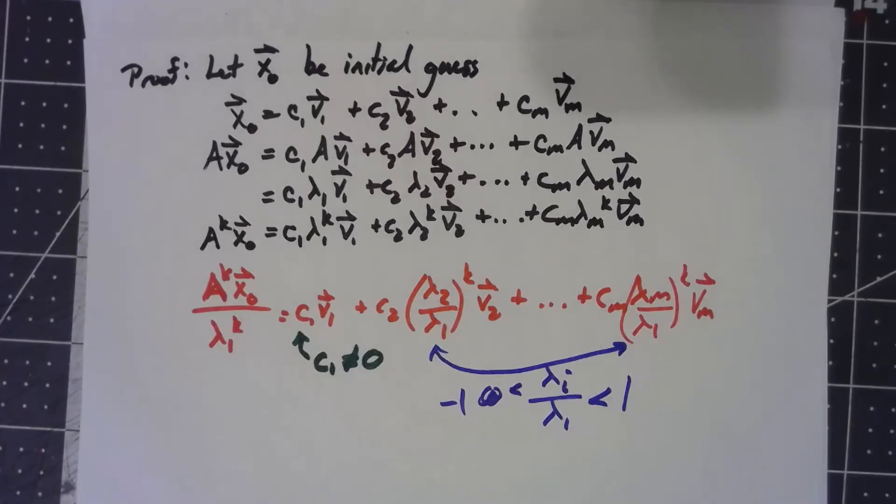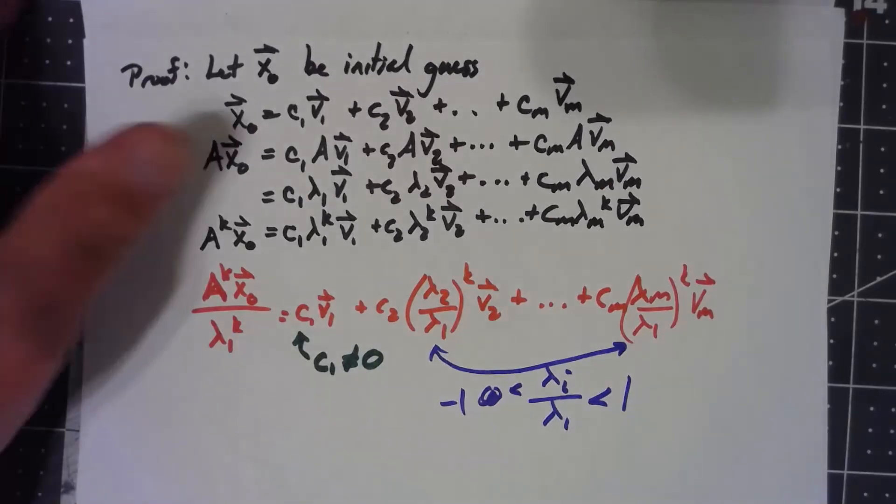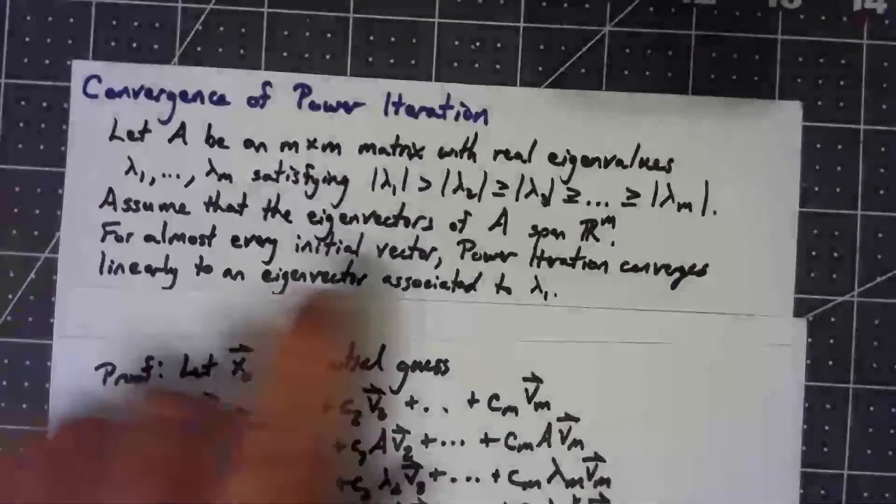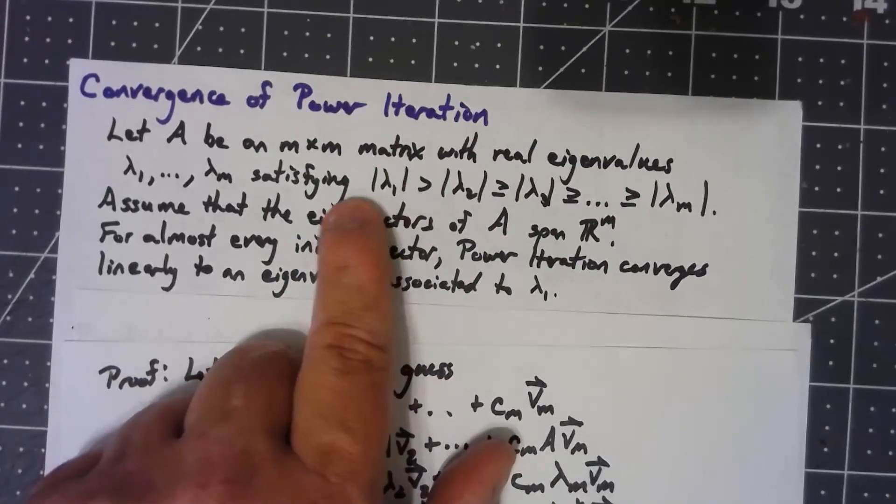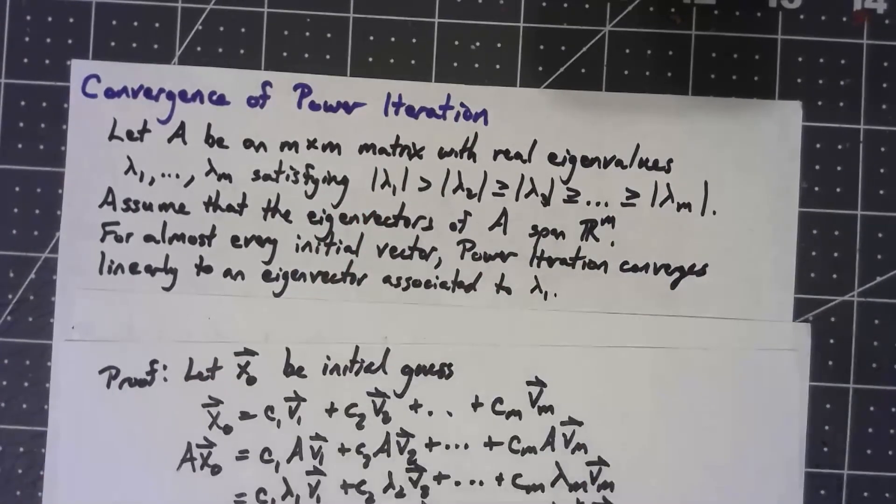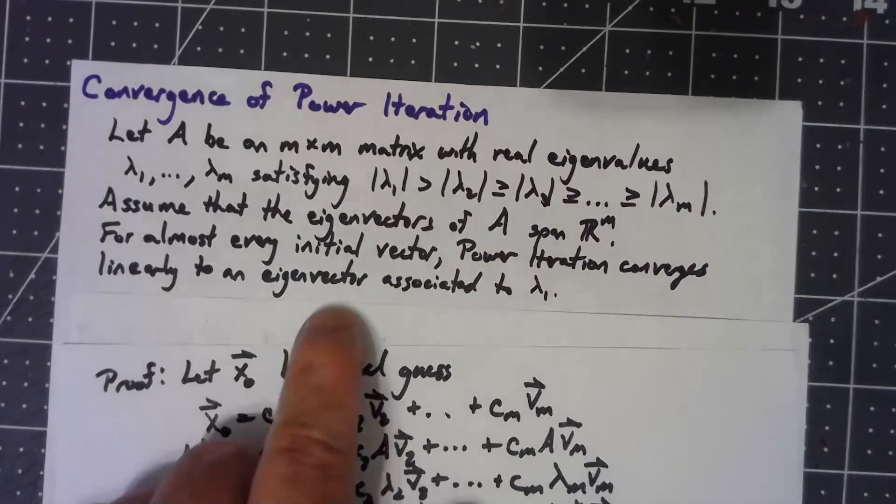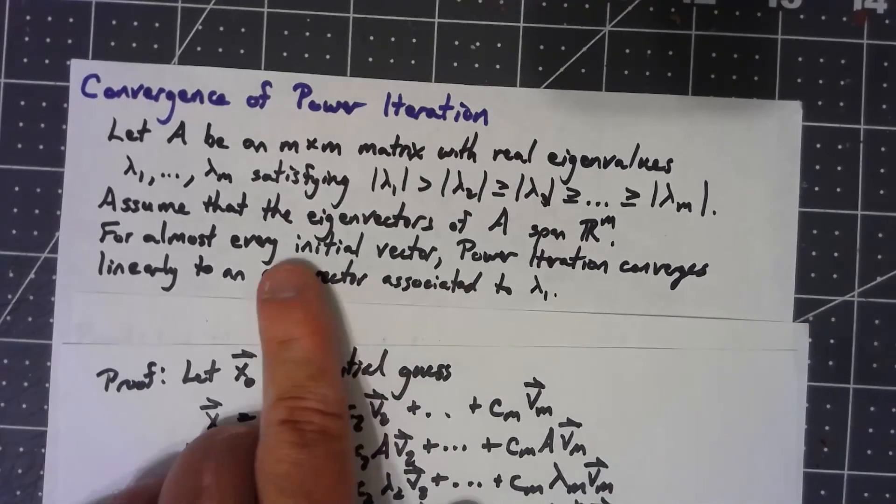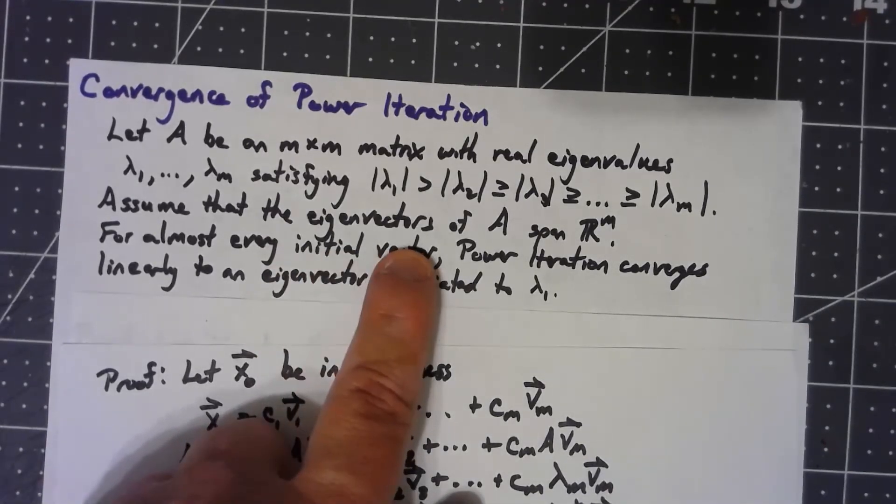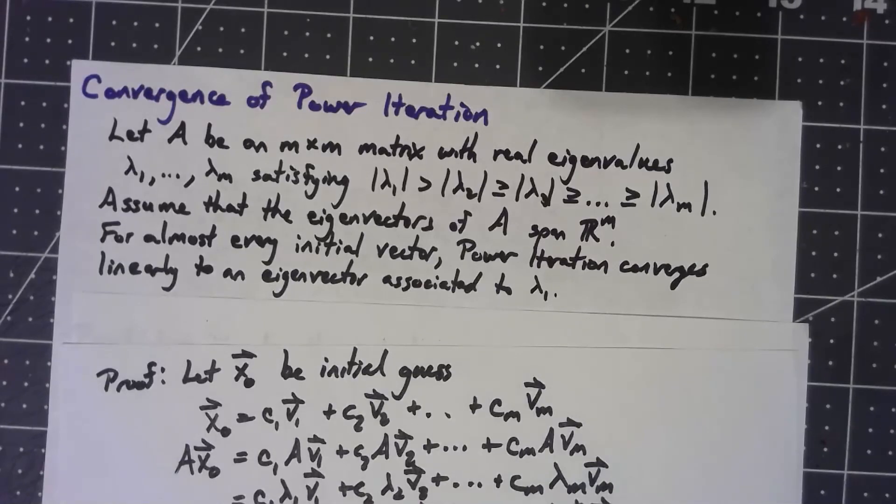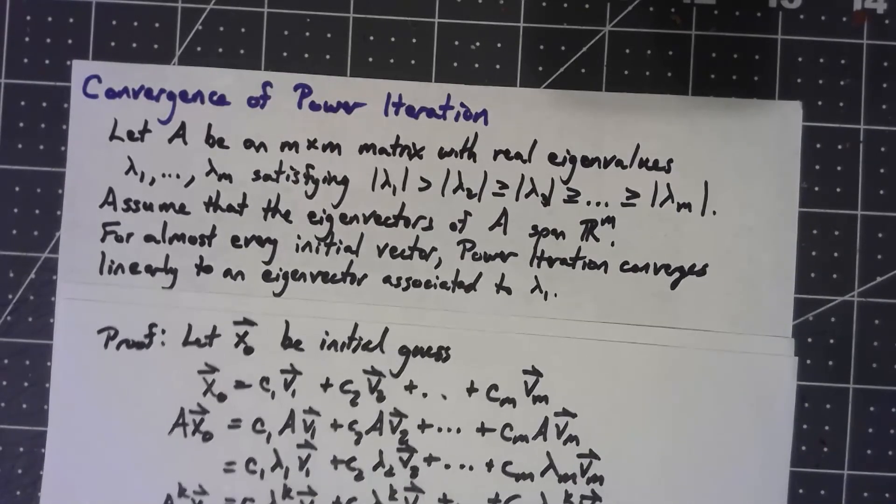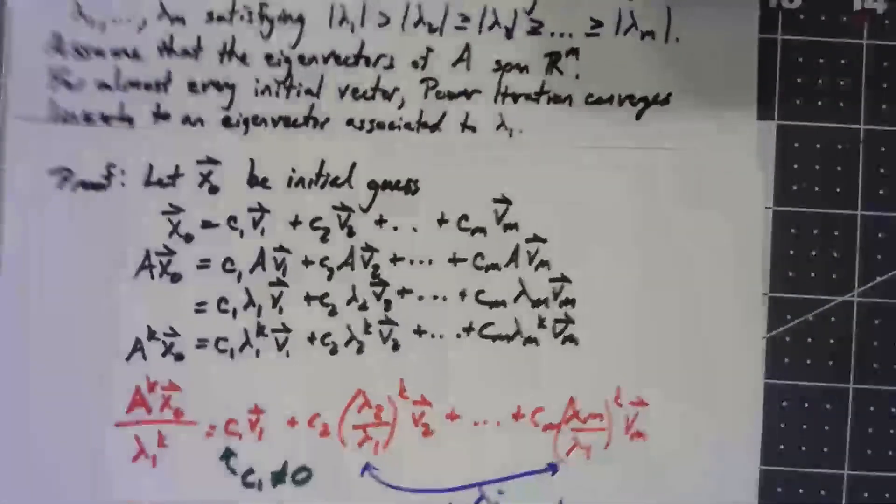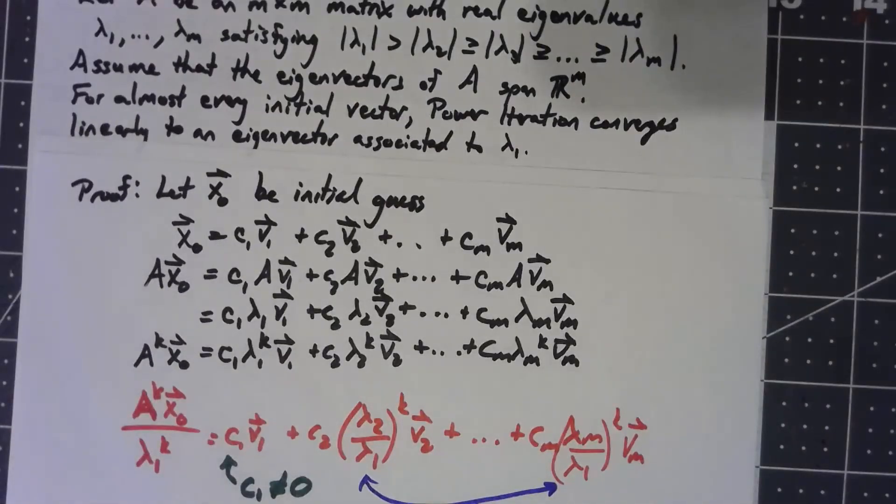So there we go. This power iteration works as long as we have this dominant eigenvalue. We have to have one eigenvalue whose absolute value is bigger than all the others, and we've got a basis of eigenvectors. Under those two conditions, this process will always converge toward an eigenvector for that dominant eigenvalue.